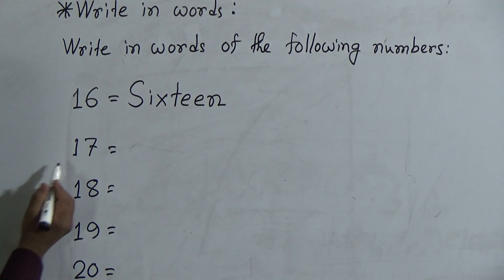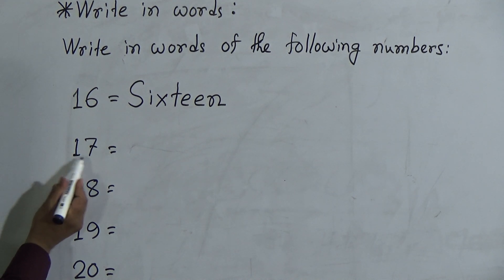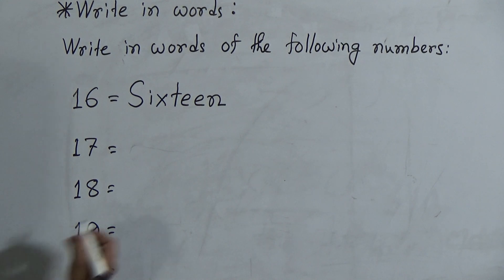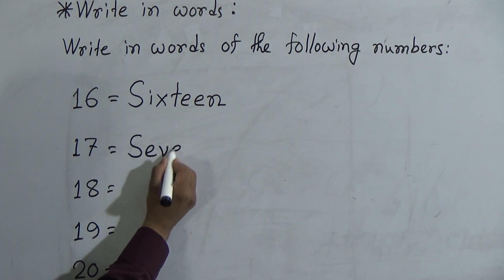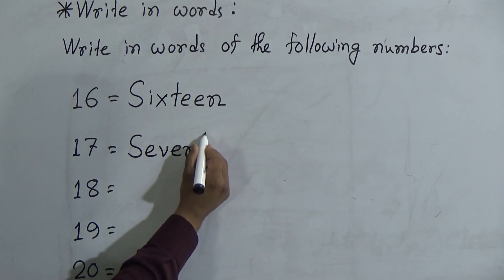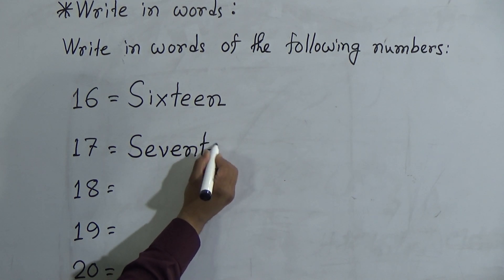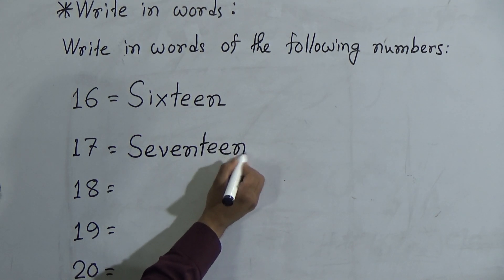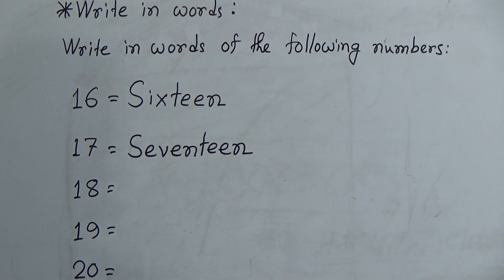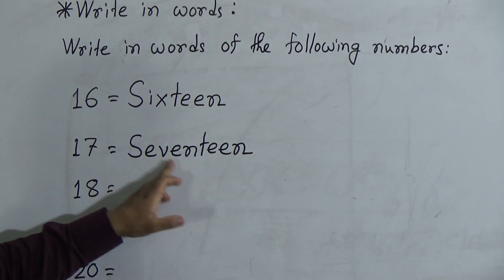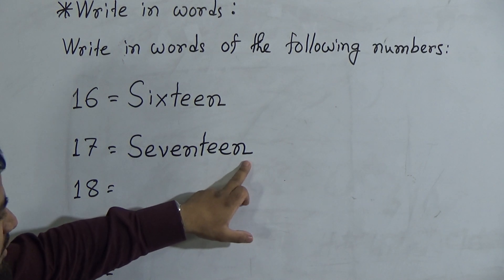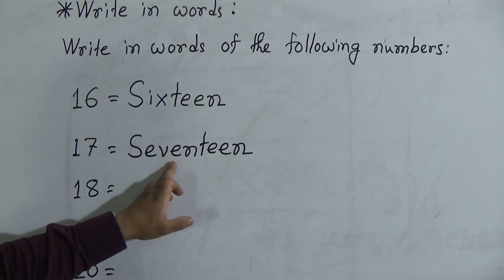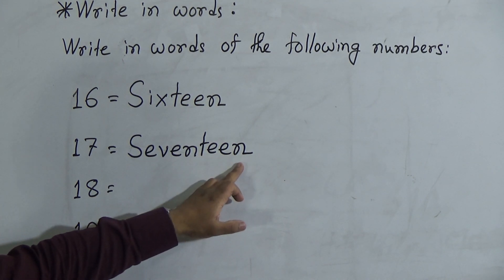The next number is 1 and 7. This number is 17. The spelling of 17 is S-E-V-E-N-T-E-E-N, 17. Or you can say S-E-V-E-N-T-E-E-N, 17.